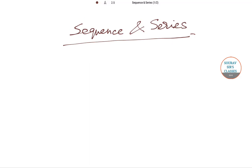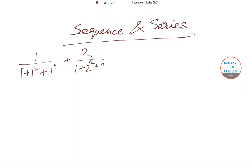Hello students, welcome to Surfshed classes. Today I am going to solve a problem from sequence and series. The series is 1/(1+1²+1⁴) + 2/(1+2²+2⁴) + 3/(1+3²+3⁴) + ... till infinity. We have to find out the sum of this infinite series.